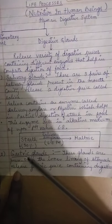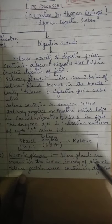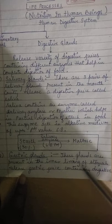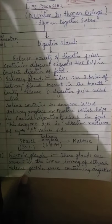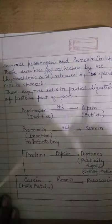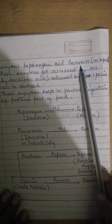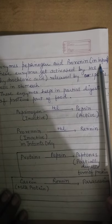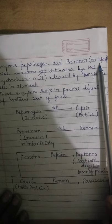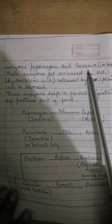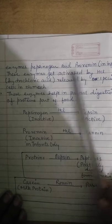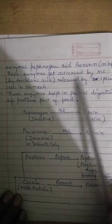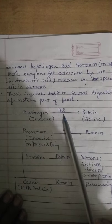The next digestive gland is the gastric glands. Gastric glands are present in the inner lining of the stomach and they release gastric juice. In gastric juice there are a variety of enzymes. Those enzymes are pepsinogen and pro-renin. Pepsinogen and pro-renin are the inactive forms of enzymes, and to activate them, a particular substance called hydrochloric acid is responsible.